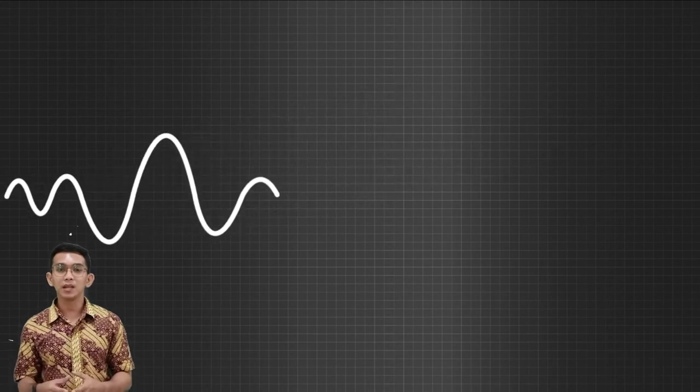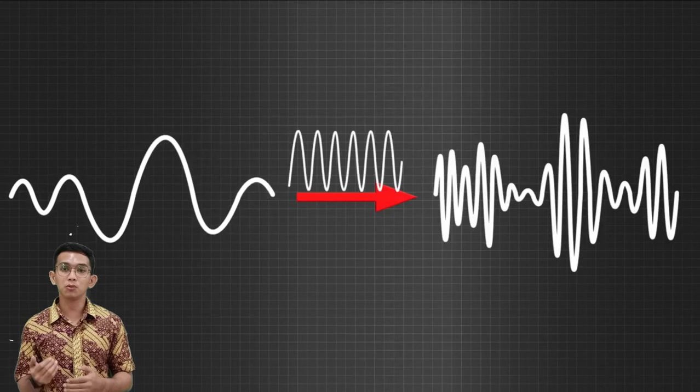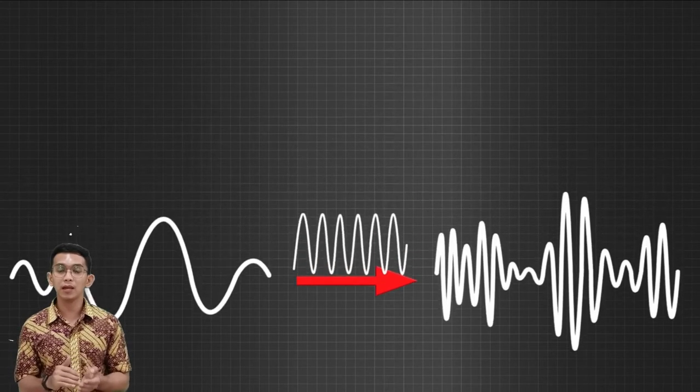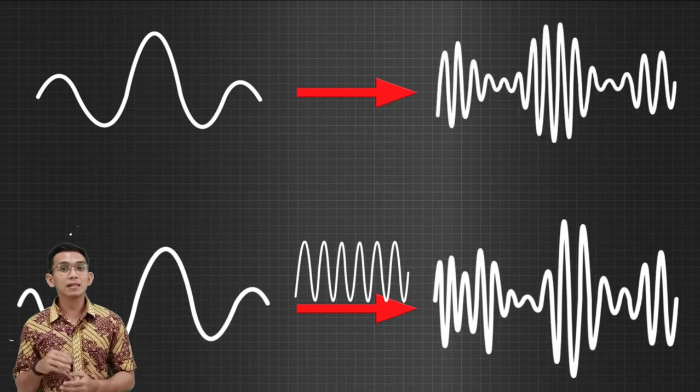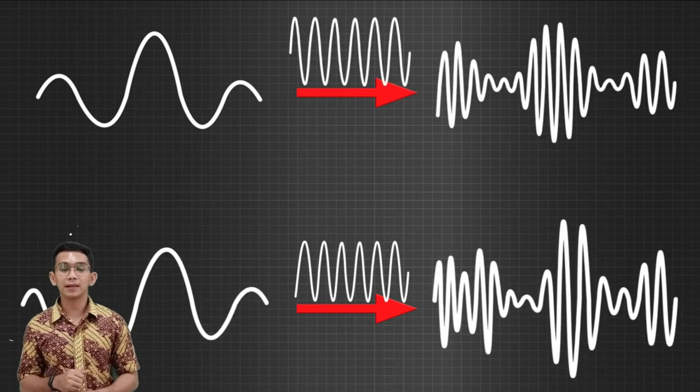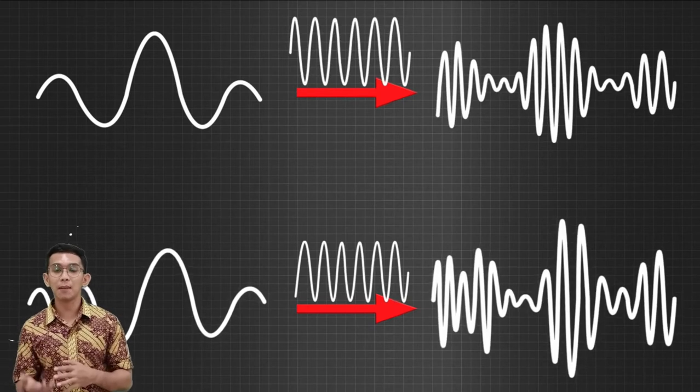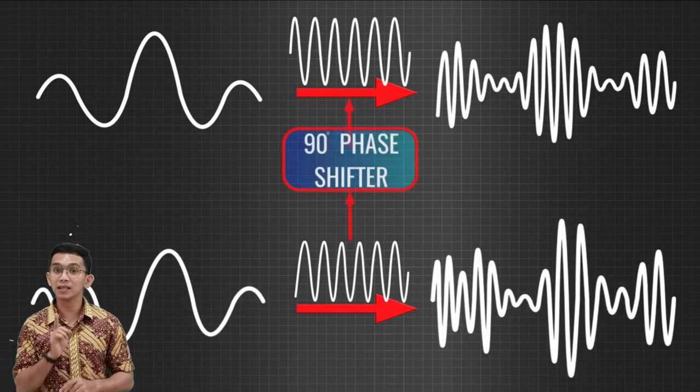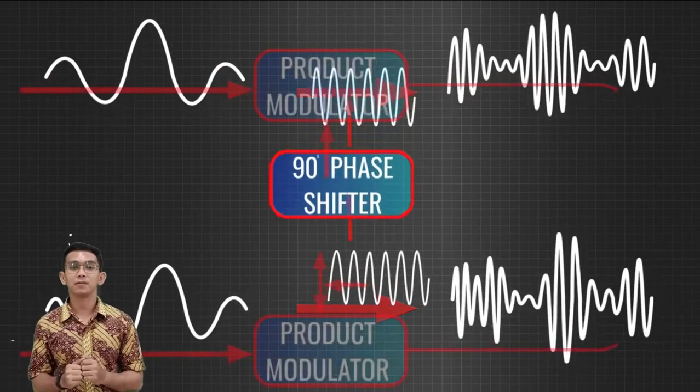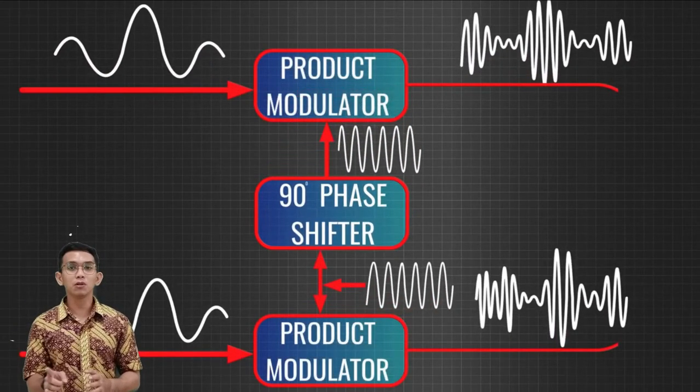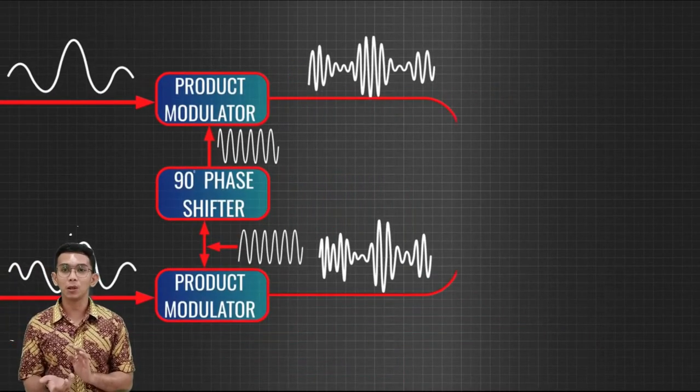Let's see how this modulation is done. In QAM, the first signal is amplitude modulated using a carrier wave as shown. The second signal is also amplitude modulated with a carrier wave of the same frequency and amplitude, but after giving the carrier signal a 90 degree phase shift.